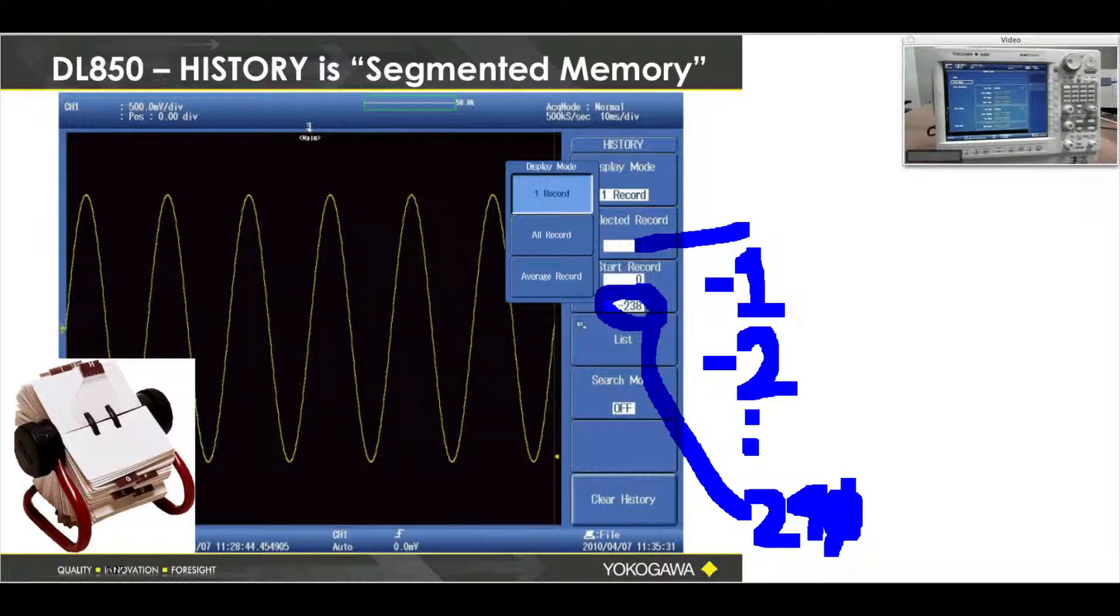There are some other very powerful features in here. I can look at one record at a time; I can look at all records on the screen simultaneously. All 240 of these waveforms can be displayed. I can also average them—I can average 240 acquisitions and make them into one acquisition.